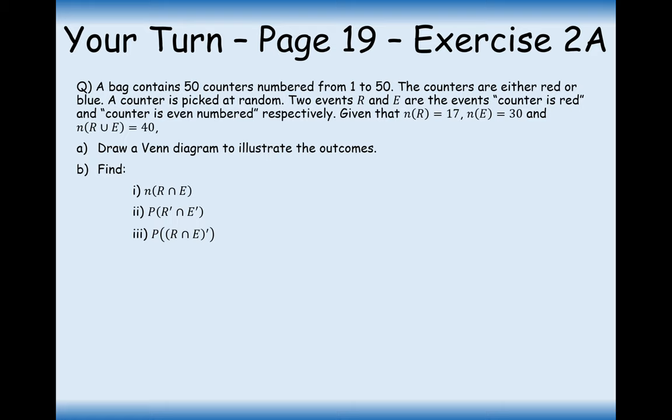Your turn to have a go at this question. Pause the video and try this question out. Let's draw a Venn diagram first. We have a bag of 50 counters numbered from 1 to 50. The counters are either red or blue, and a counter is picked at random. Two events, R and E, are the events that the counter is red and that the counter is an even number. Given that the number of red counters is 17 and the number of even numbers is 30, and the number of red or even numbers is 40, draw the Venn diagram.